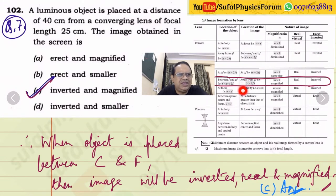We can easily write this considering the ray diagram. When object is placed between C and F, then image will be inverted, real, and magnified. So option number C.